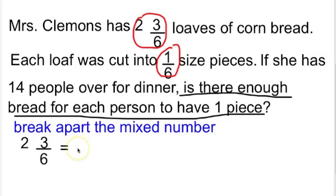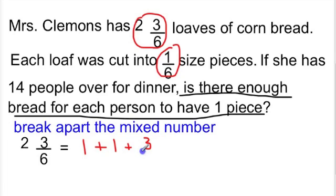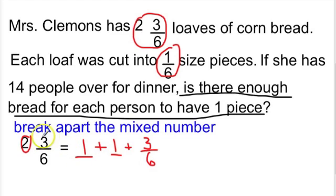So essentially, we are going to be looking at 2 and 3/6 like this. We are saying that it is going to equal 1 plus 1 — 1 whole plus 1 whole plus 3/6. So we are taking the mixed number and starting to break it apart. We can see that this 1 whole plus this 1 whole is essentially how the 2 came to be, and then 3/6 is the fraction on its own.